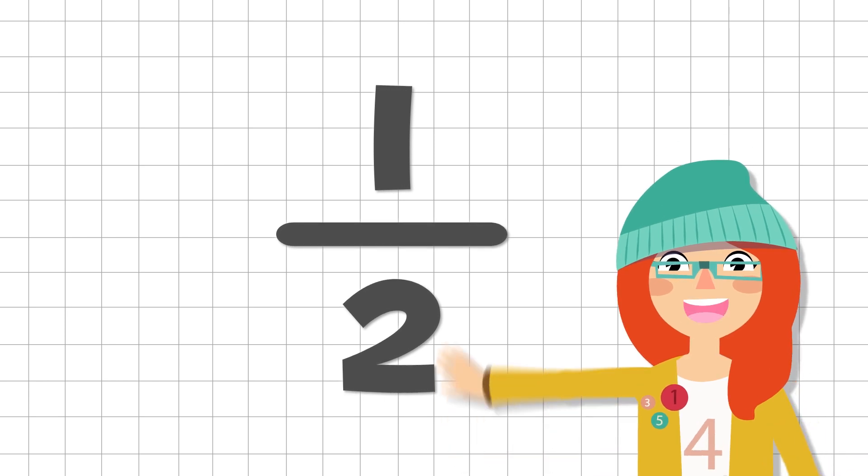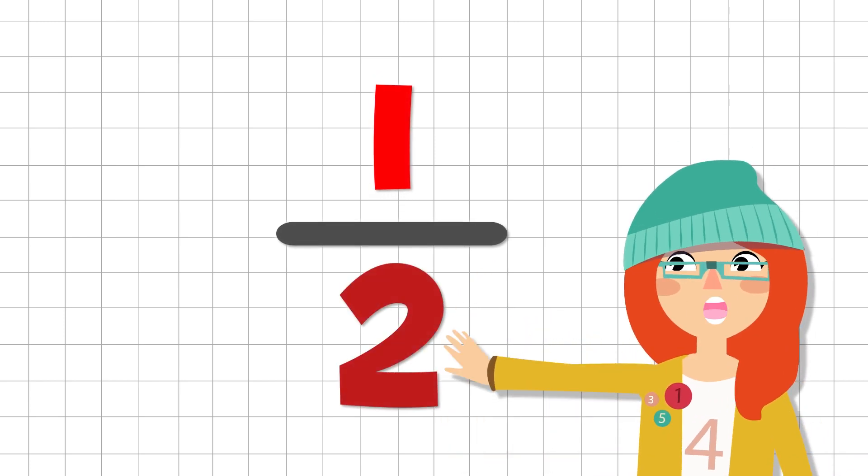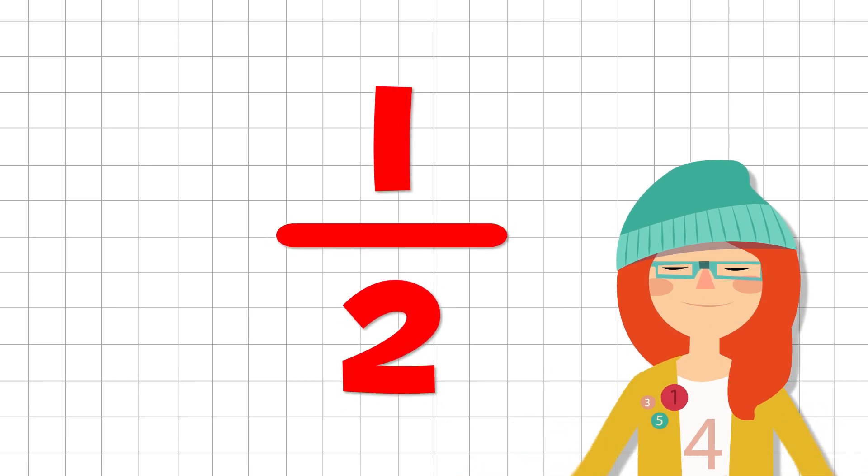Fractions are made up by two numbers. The number above and the number below. A line separates these numbers.